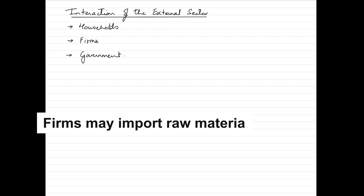Households might also import goods and services from foreign sectors, such as purchasing clothing, electronics, and food items. When we talk about firms, they also interact with the foreign sector by exporting or importing goods and services, though this is a little different from households. For example, a firm might import raw materials, machines, and components, and export its products to foreign customers or businesses.